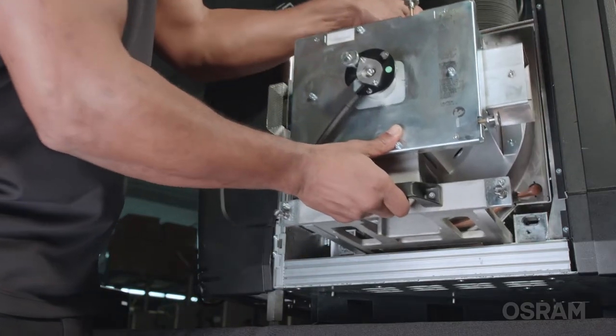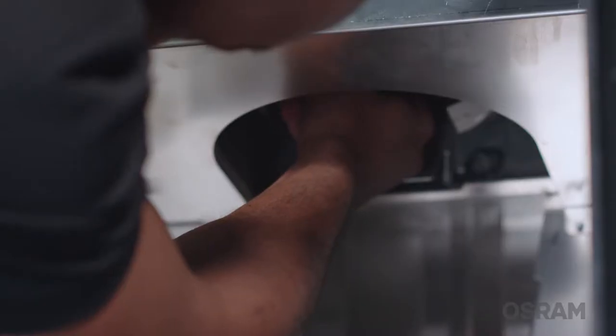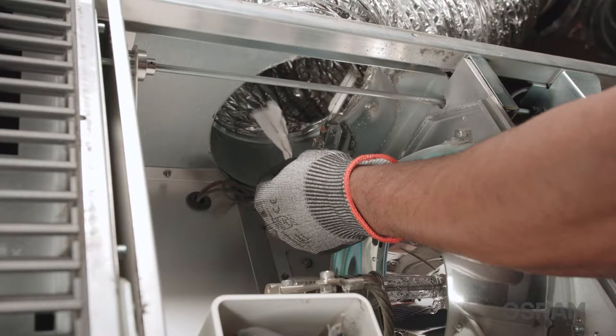To check the extraction, remove the ducting from the projector exhaust and place your hand just inside the opening. If you feel your hand being pulled into the hole, the roof extraction is on and functional.